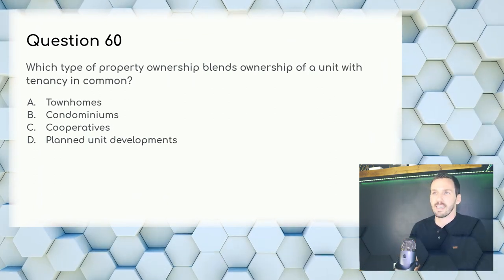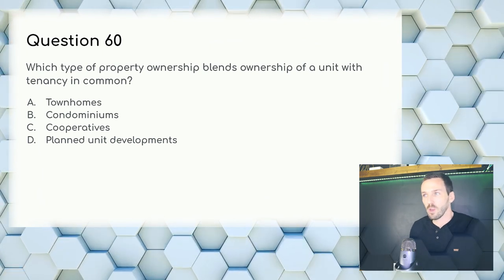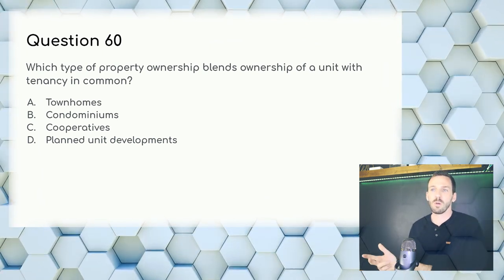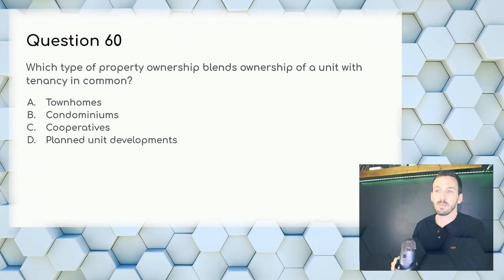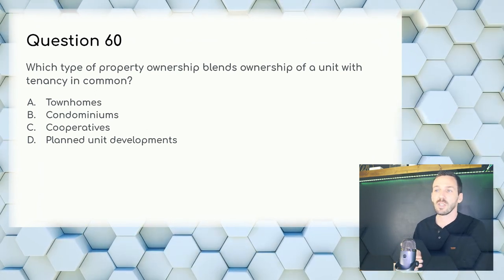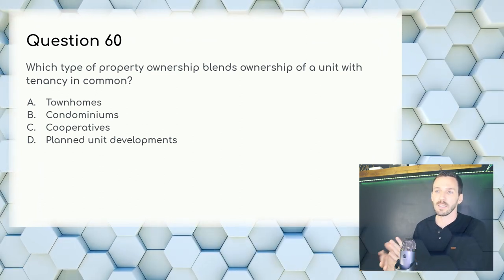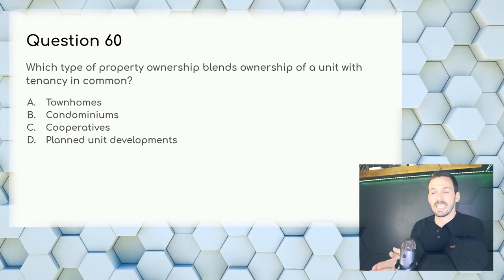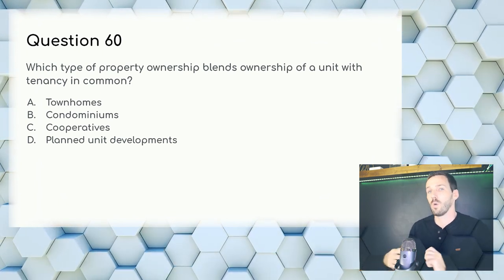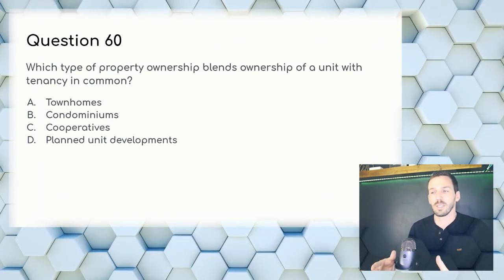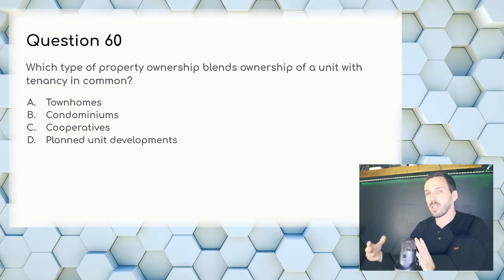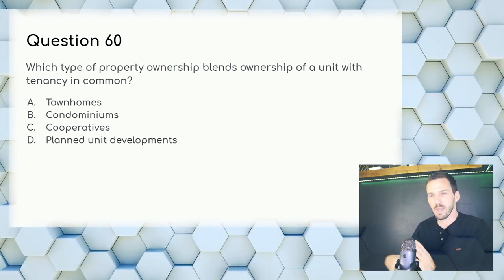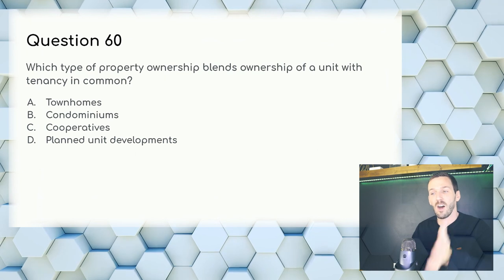Question 60: Which type of property ownership blends ownership of a unit with tenancy in common? You would own your unit but share an area with your neighbors — like sharing a lobby. Answer: B, condominiums.